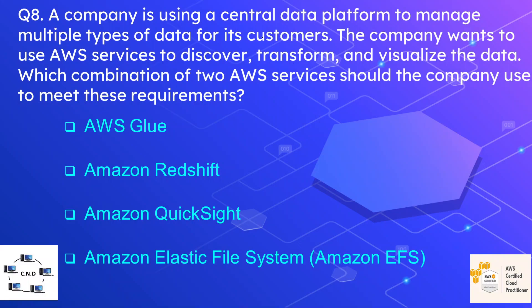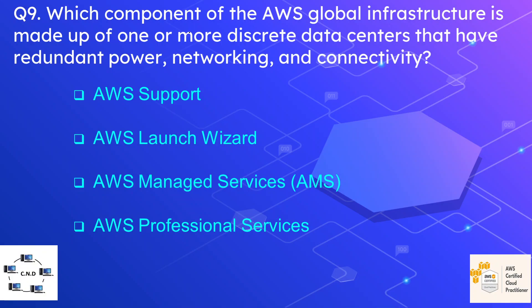Question number eight: a company is using a central data platform to manage multiple types of data for its customers. The company wants to use AWS services to discover, transform, and visualize the data. Which two AWS services should the company use? The options are AWS Glue, Amazon Redshift, Amazon QuickSight, and Amazon Elastic File System. The correct options are AWS Glue and Amazon QuickSight, which together enable customers to discover, transform, and visualize data.